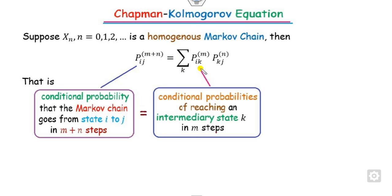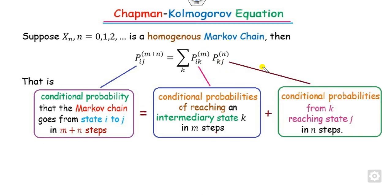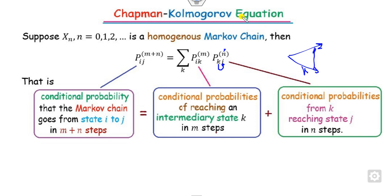This is the same as the conditional probability of reaching from state i to state k in m steps, multiplied by the conditional probability from state k to state j in n steps. So the meaning is: if you want to go from i to j, you go through an intermediate state k — first from i to k, then from k to j.